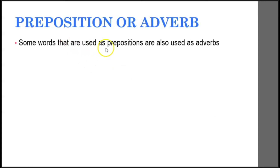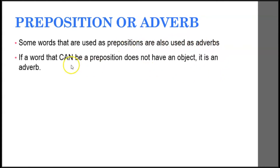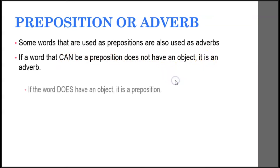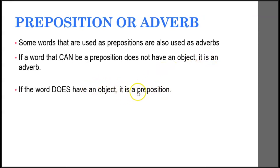Some words that are used as prepositions are also used as adverbs. If a word that can be a preposition does not have an object — you can't answer the 'what' question — then it is an adverb. If the word does have an object, then it's acting as a preposition.